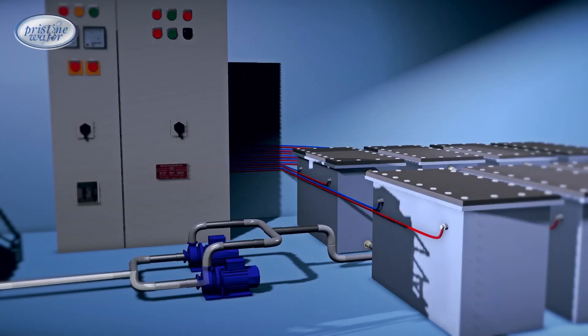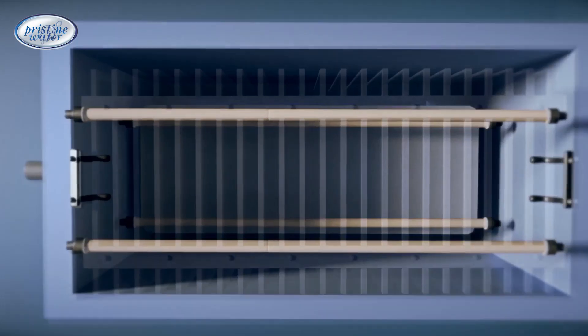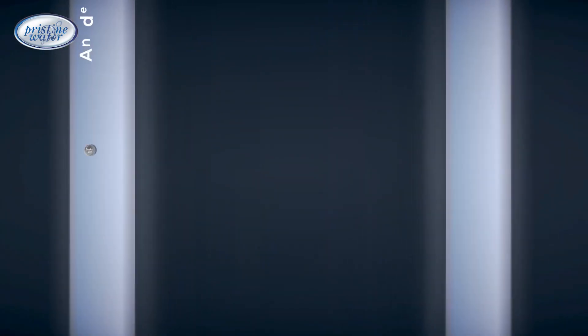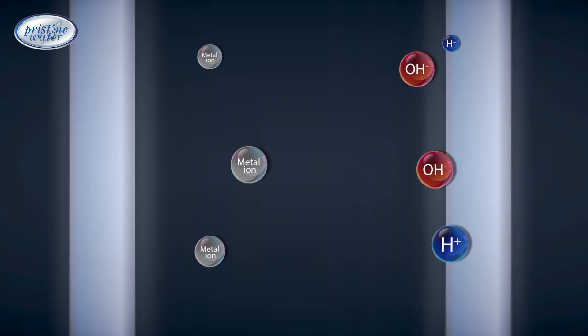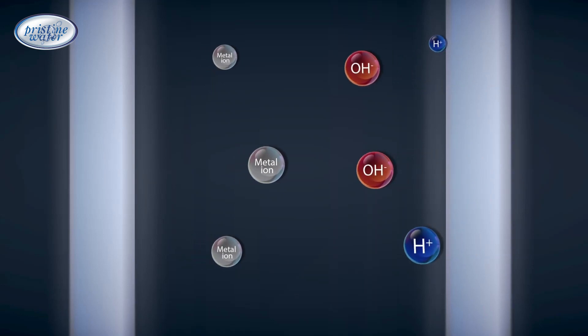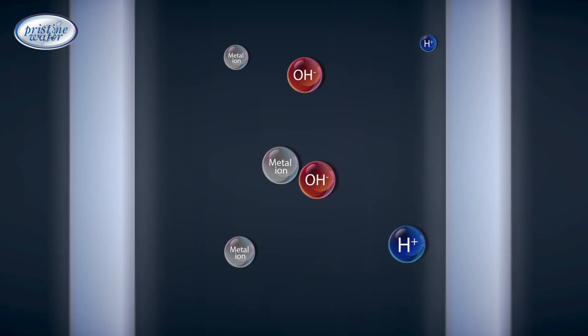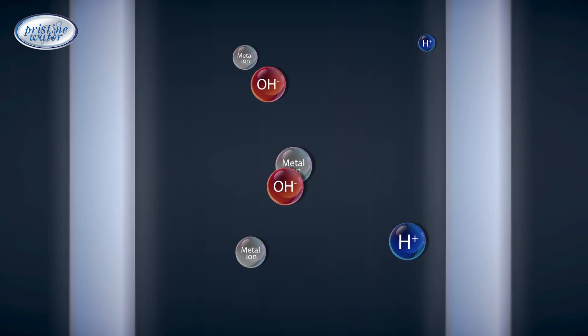The effluent enters the reactor through the effluent pump. When DC current from the power supply flows between the electrodes, metal ions from the anode are released into the water. Simultaneously, on the cathode, hydroxyl groups and hydrogen are produced. This hydroxyl combines with metal ions from the anode and forms metal hydroxides.